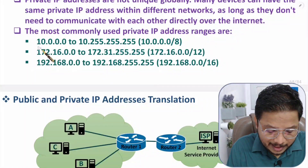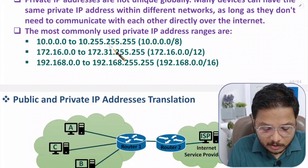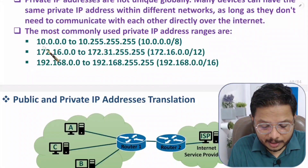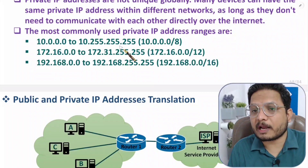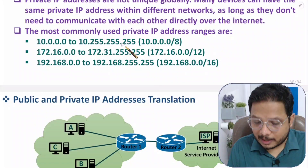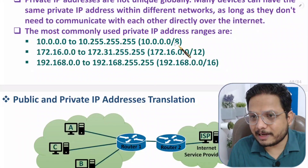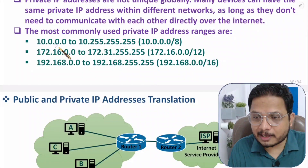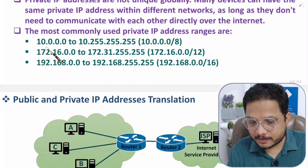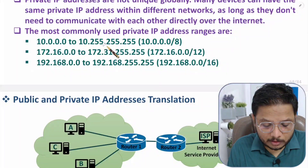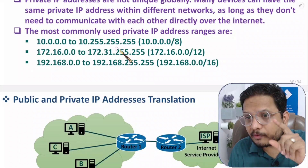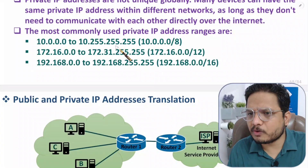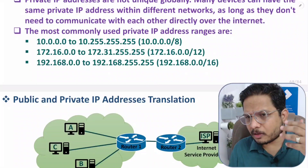The first private IP range is 10.0.0.0 to 10.255.255.255. This range has a mask size of 8 bits, meaning 24 bits are available for host addresses, giving 2 to the power 24 private IPs available within this range. This range can be used by huge networks like Google and Amazon.